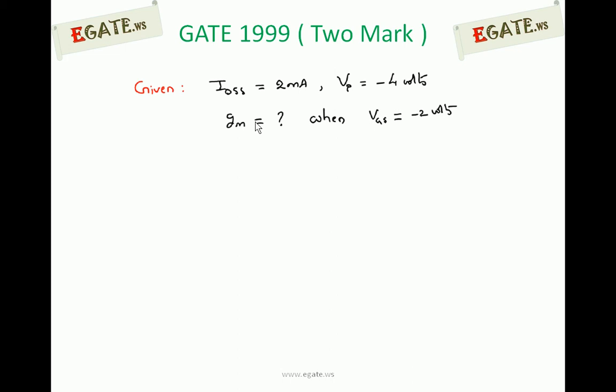We know the equation for transconductance: GM is equal to GM0 into 1 minus VGS by VP. GM0 is nothing but maximum transconductance which occurs when VGS is equal to 0 volts. That can be written as 2 IDSS by VP.